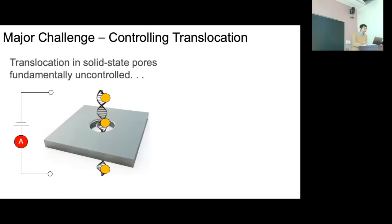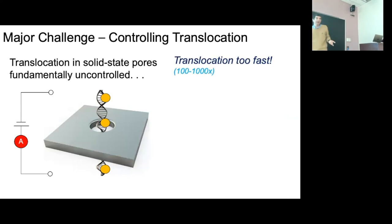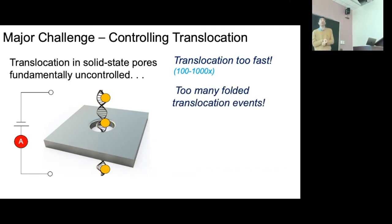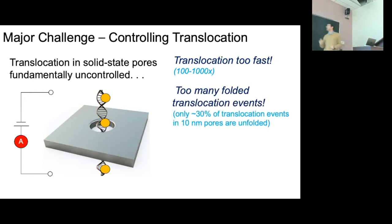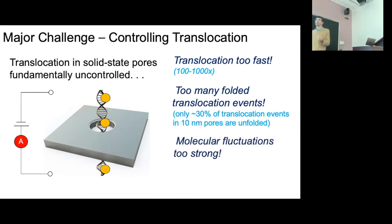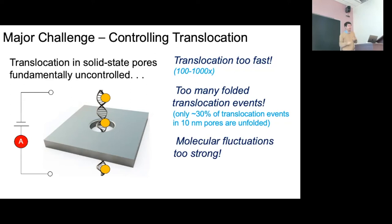Uncontrolled translocation creates problematic limitations. The translocation is too fast: small bumps in the DNA get attenuated by the filter. There are many folded translocation events — if folded, I can't extract one-to-one correspondence between probe and sequence. Only about 30 percent of translocation events in a 10 nm pore are unfolded. I can use a smaller pore to suppress folding but then I can't look at large analytes. The molecular fluctuations are very broad, creating noise on probe position determination.